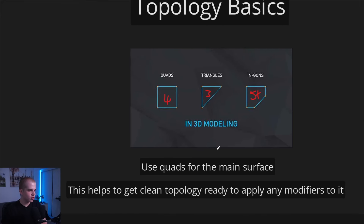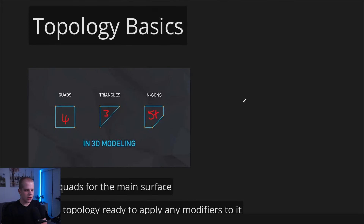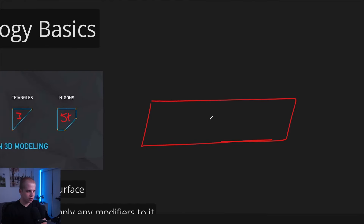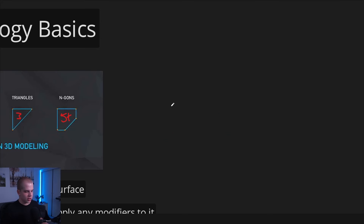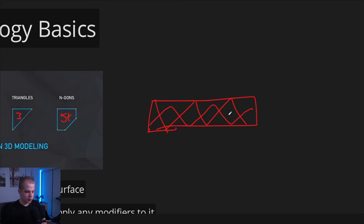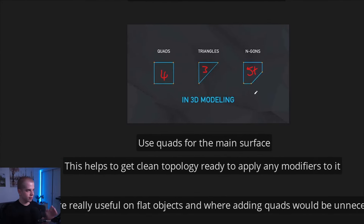Use quads for your main surface. Quads help a lot in terms of subdivision — if you have a line of faces, being able to subdivide them into halves is much easier. If you compare that to a model that has a bunch of triangles and you add a subdivision modifier, it's not going to look good. You'll end up with vertices going all over the place, and it's going to be a total nightmare.